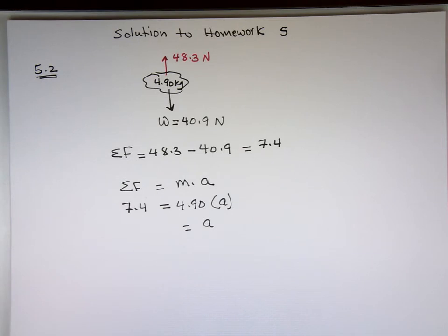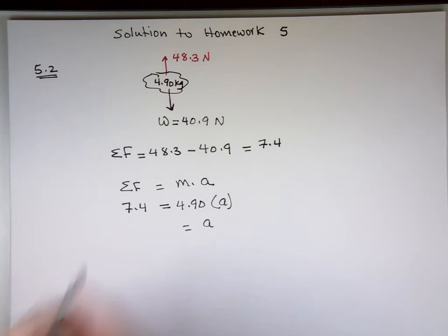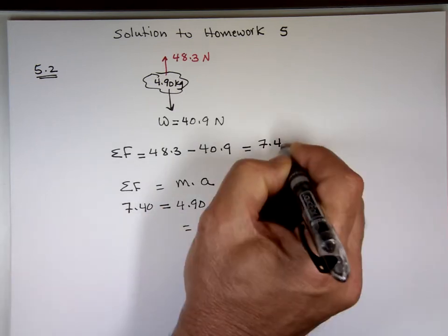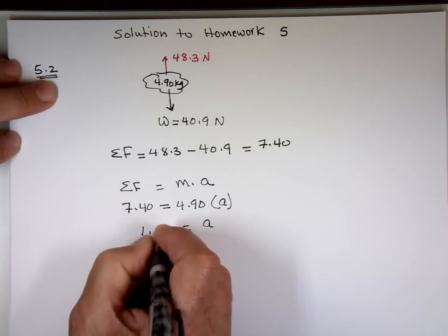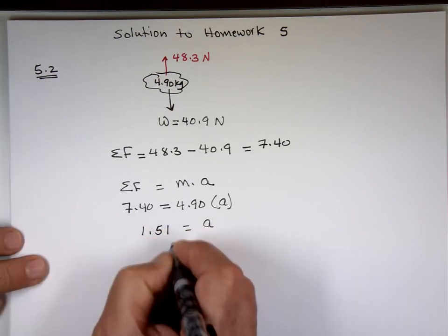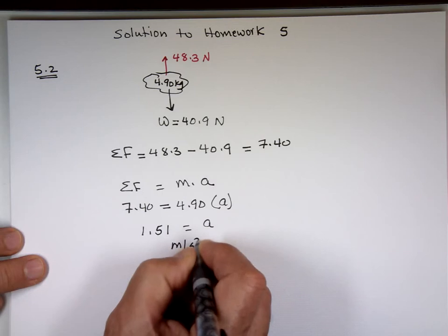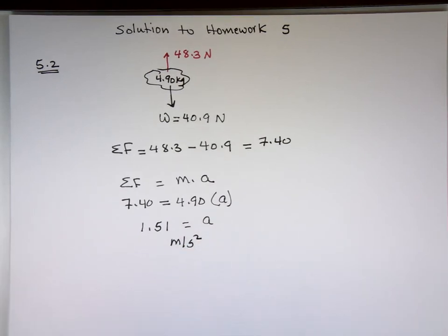7.40 divided by 4.90, because they want three significant digits, which is 1.51 meters per second squared.